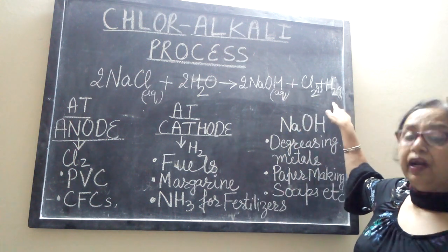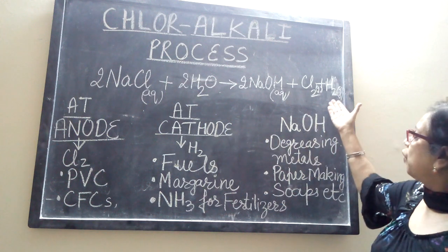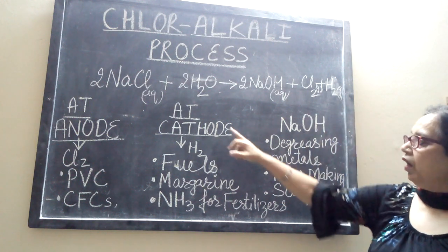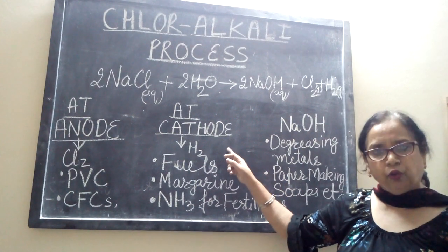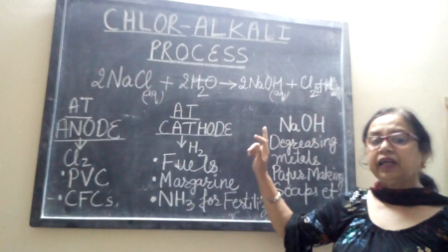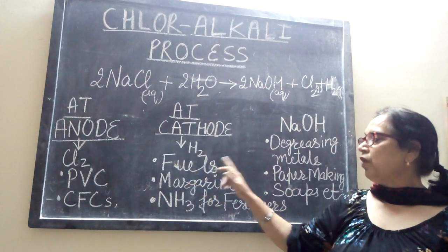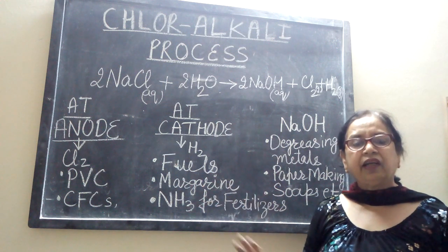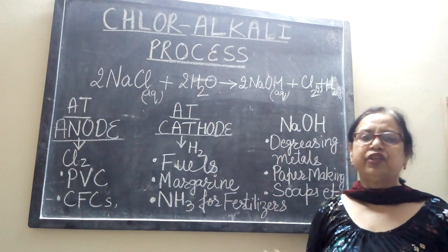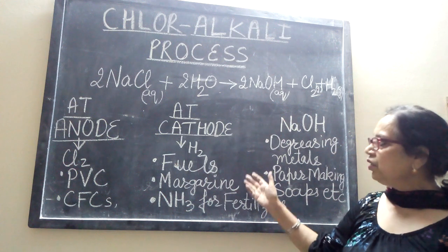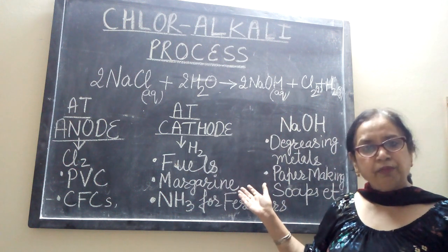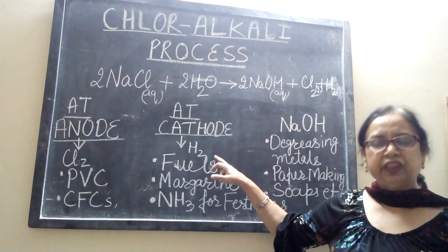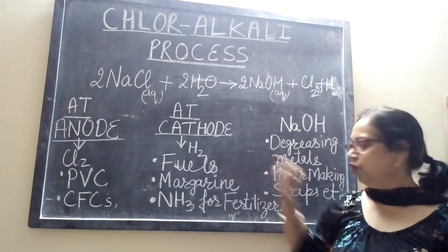The next product of the chloralkali process is hydrogen, which we get at the cathode. This hydrogen can be used in the preparation of various fuels and margarine — that is artificial fat. To get margarine in factories, we need to do hydrogenation, for which we need hydrogen.